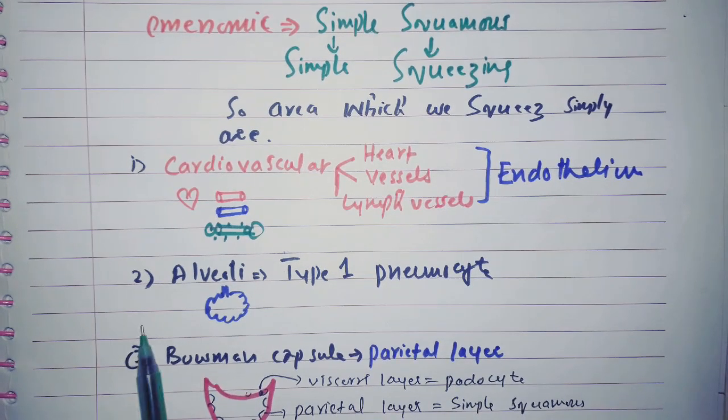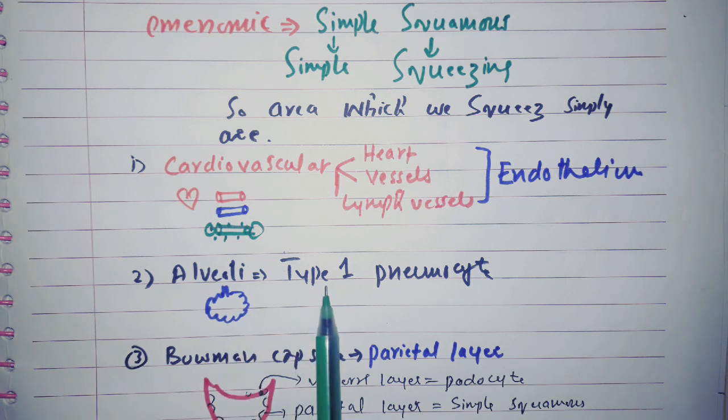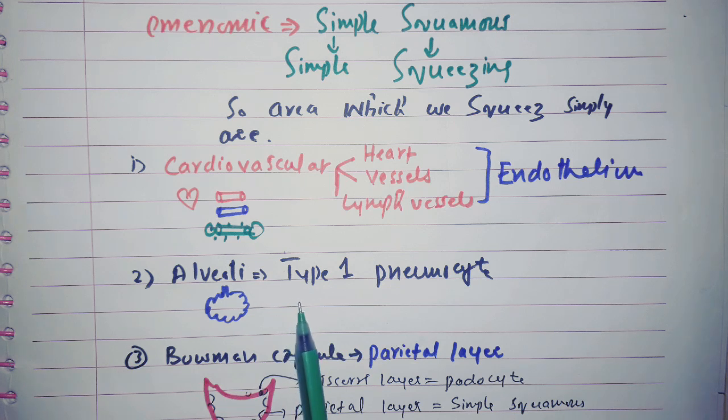Now in the lung alveoli we can squeeze the alveoli, just in reality we cannot squeeze the alveoli but I will say like we can squeeze it. So the alveoli is consisting of type 1 pneumocyte and type 2 pneumocyte. The type 1 pneumocyte is actually the simple squamous epithelium. The type 2 pneumocyte, the lamellar body in the type 2 pneumocyte produces surfactant.